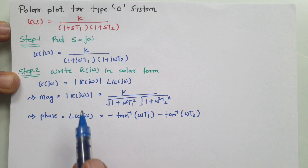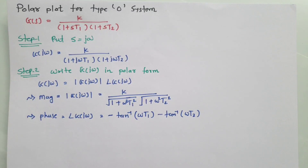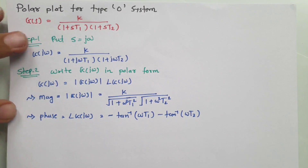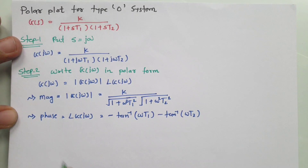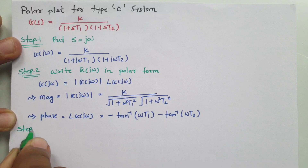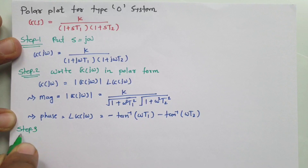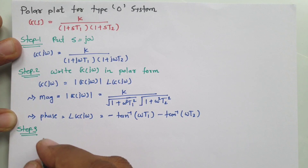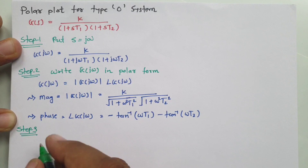Now we have magnitude and phase, which we can use for polar plot calculation. In the third step, we identify two essential points: ω equals 0 and ω equals infinity.